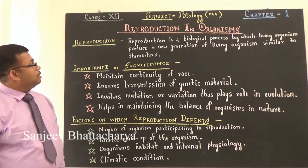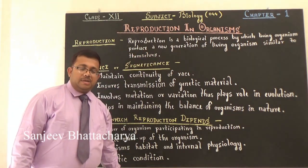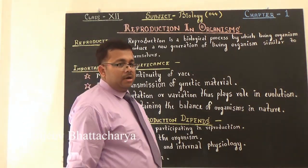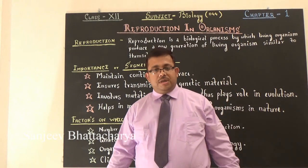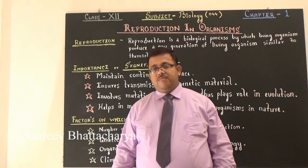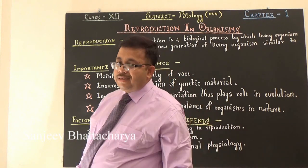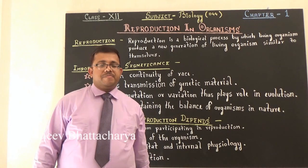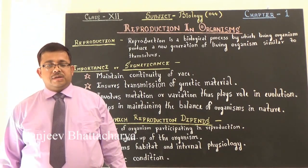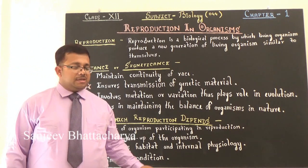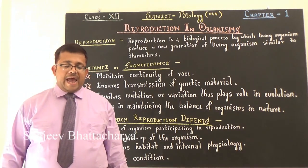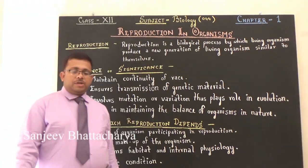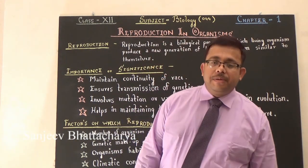In this chapter Reproduction in Organism, we have to learn only two things: Number 1, Reproduction, and Number 2, Types of Reproduction. We have to learn the basic concepts of Reproduction, the exceptions, the definitions, the examples, and some specialties related to Reproduction.